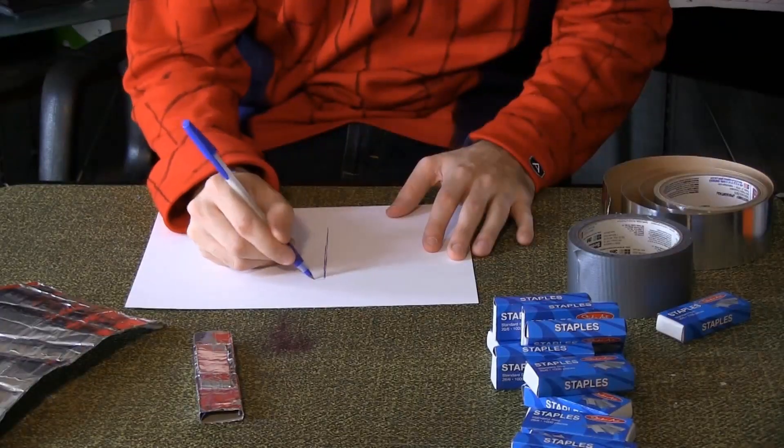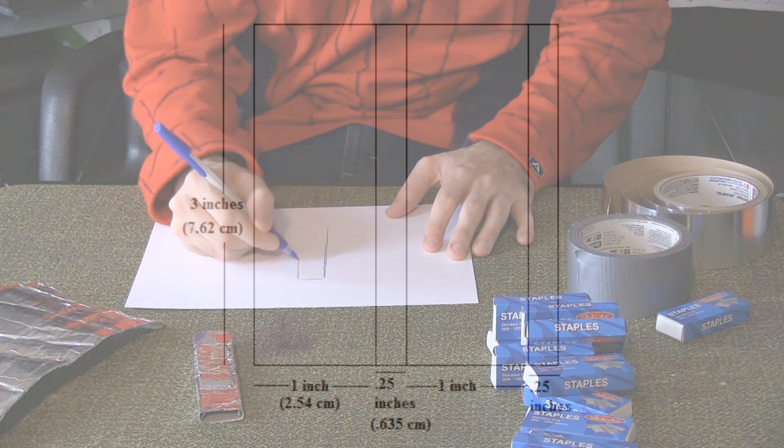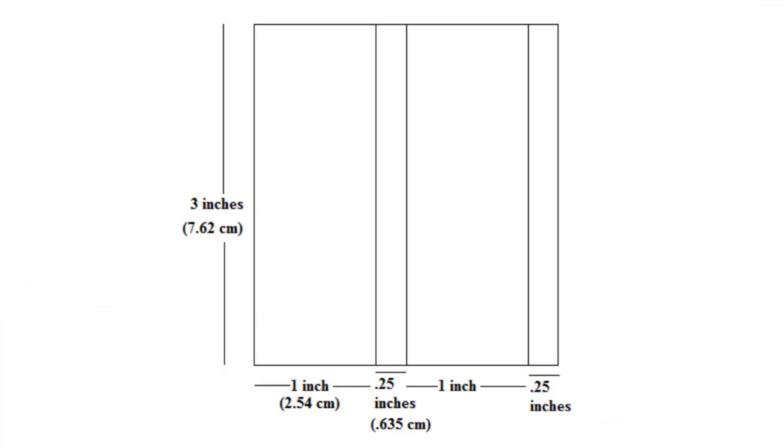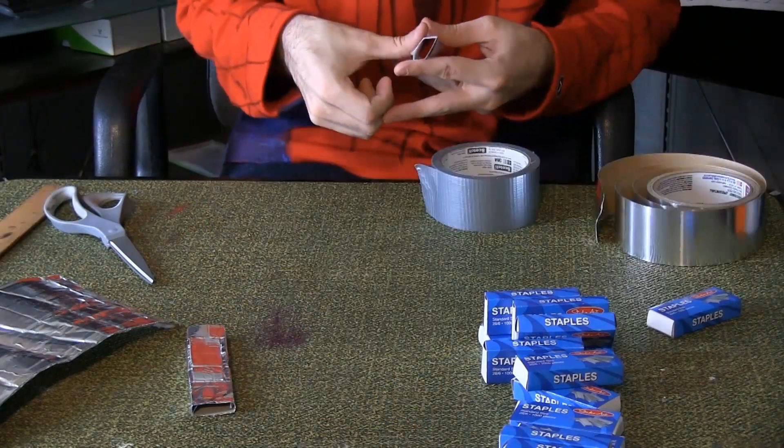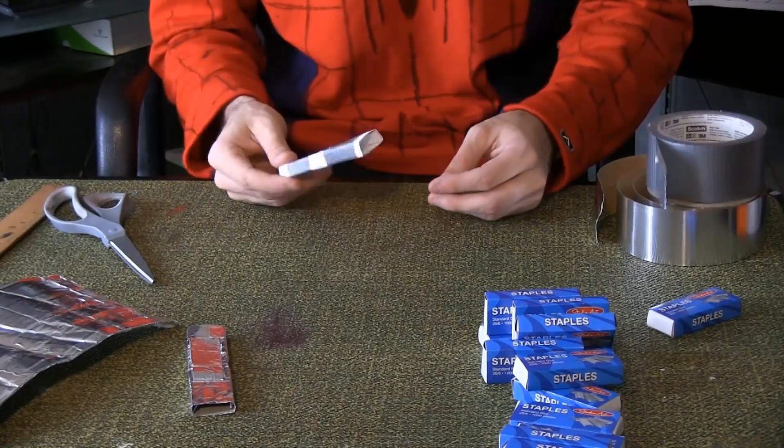As an alternative to the staple boxes, you can cut this design out of cardstock, fold it together, and tape it up. While the staple boxes were the more costly alternative, they were also the quicker one.